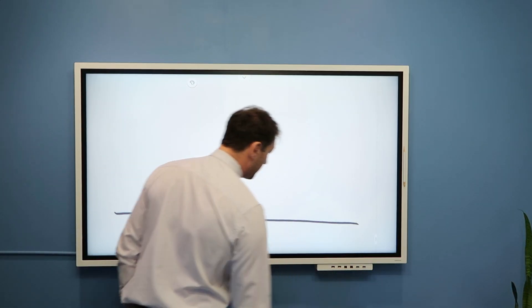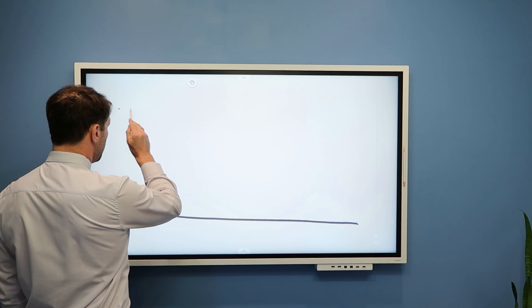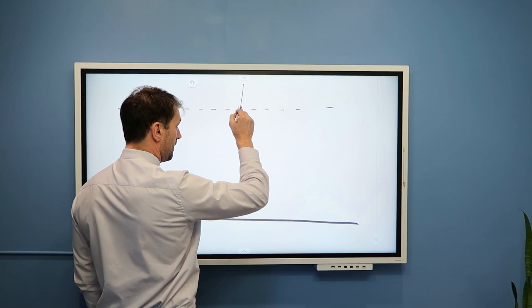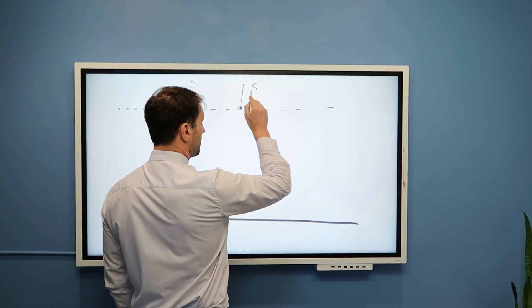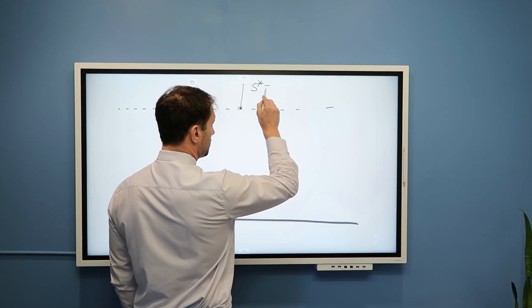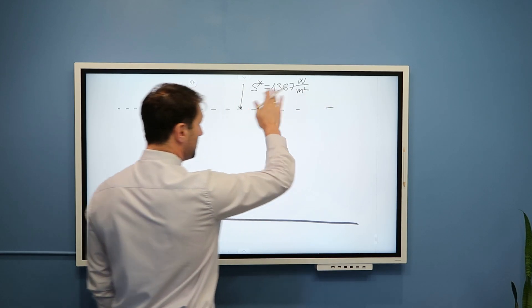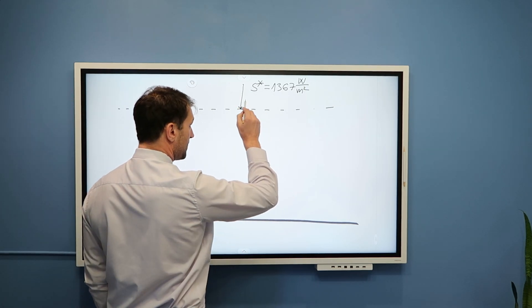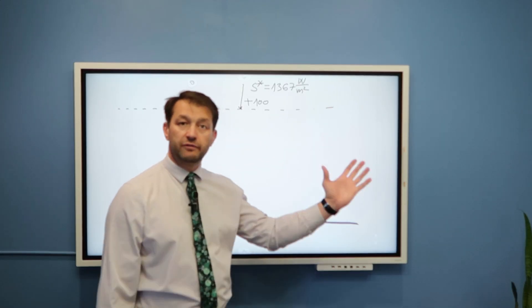Just as in the previous video, we are going to look into an imaginary surface at the Earth's surface, and this represents the annual global average. Here somewhere we have the top of the atmosphere. At the top of the atmosphere, we receive 100% or 100 units of radiation from the sun. These 100 units in absolute numbers are equal to the solar constant — 1367 watts per square meter. But we say this amount of radiation equals 100 units, and we can break those 100 units into different components.